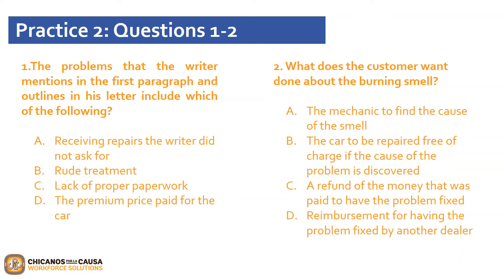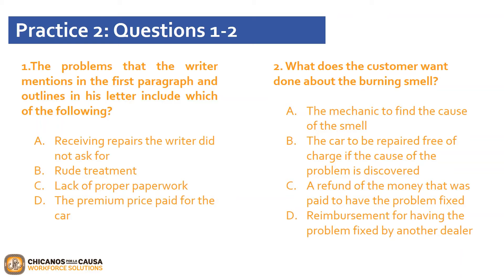Now that we have read the practice, let's go ahead and answer some of the following questions. Question 1: the problems that the writer mentions in the first paragraph and outlines in his letter include which of the following? A, receiving repairs the writer did not ask for; B, rude treatment; C, lack of proper paperwork; or D, the premium price paid for the car. The correct answer is C, lack of paperwork. As the writer discusses the problem, he states that he wants an itemized and proper bill of sale. He does mention the premium price, which is choice D, but that price is the reason he expects proper paperwork and is not a complaint in and of itself.